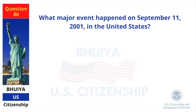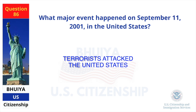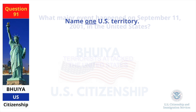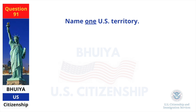What major event happened on September 11, 2001 in the United States? Terrorists attacked the United States. Name one US territory. Guam.